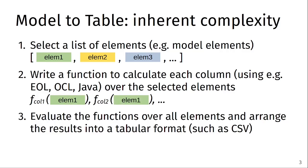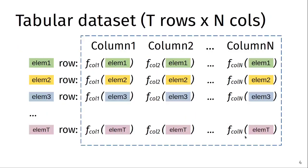We evaluate the functions over all the elements and arrange all the results into a tabular format such as CSV, Excel, or anything we may need. In the end, for each element we will have a row, and each row is composed by the evaluation of all those functions. These are the steps we need to perform every time we want to extract a dataset.